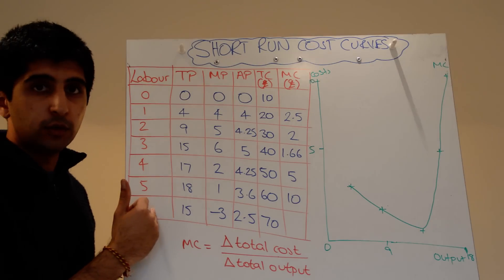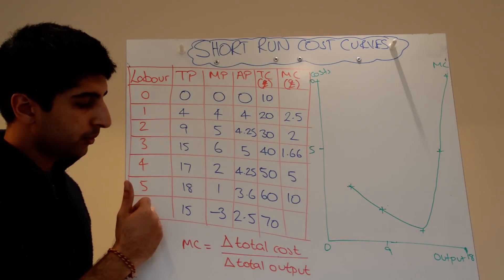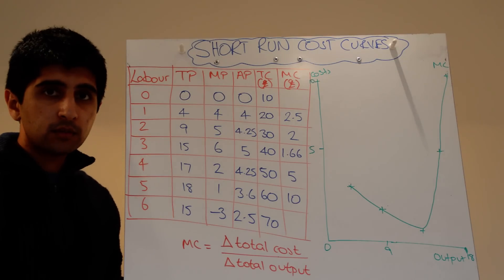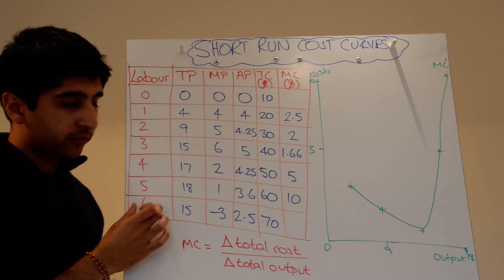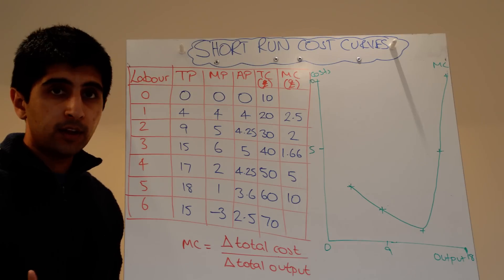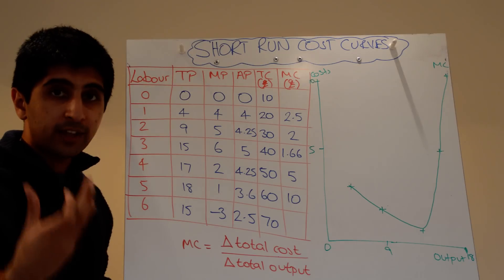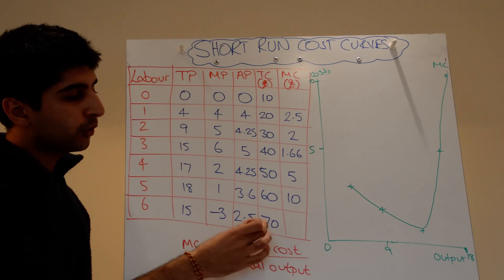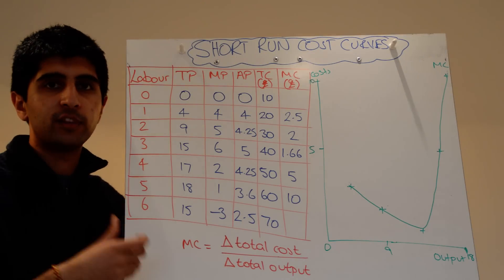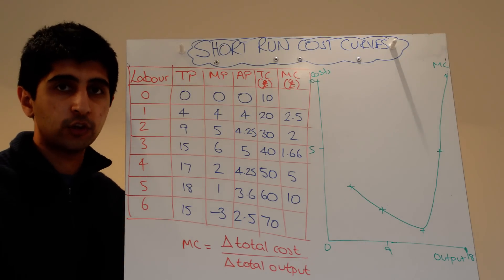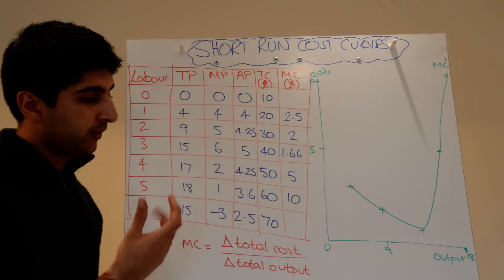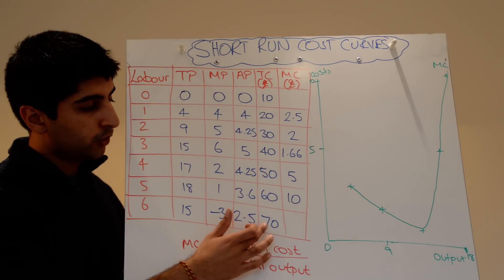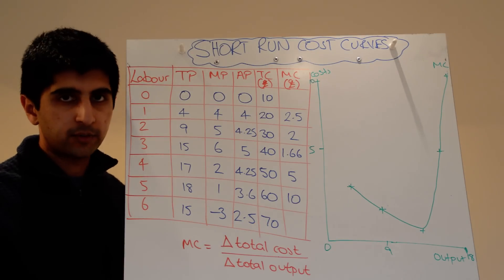To take six units of labour as an example: it costs £60 to hire six units of labour — six times £10 each is £60 — but we've also got £10 worth of fixed costs on top. So £60 plus £10 is £70; our total cost is £70.